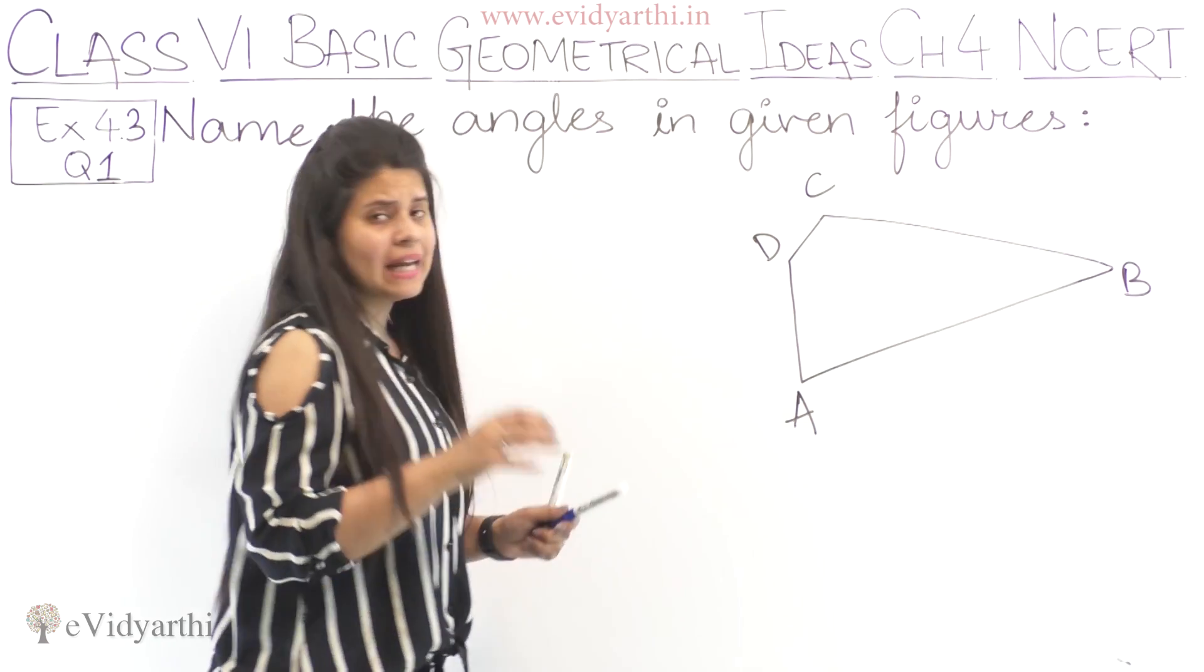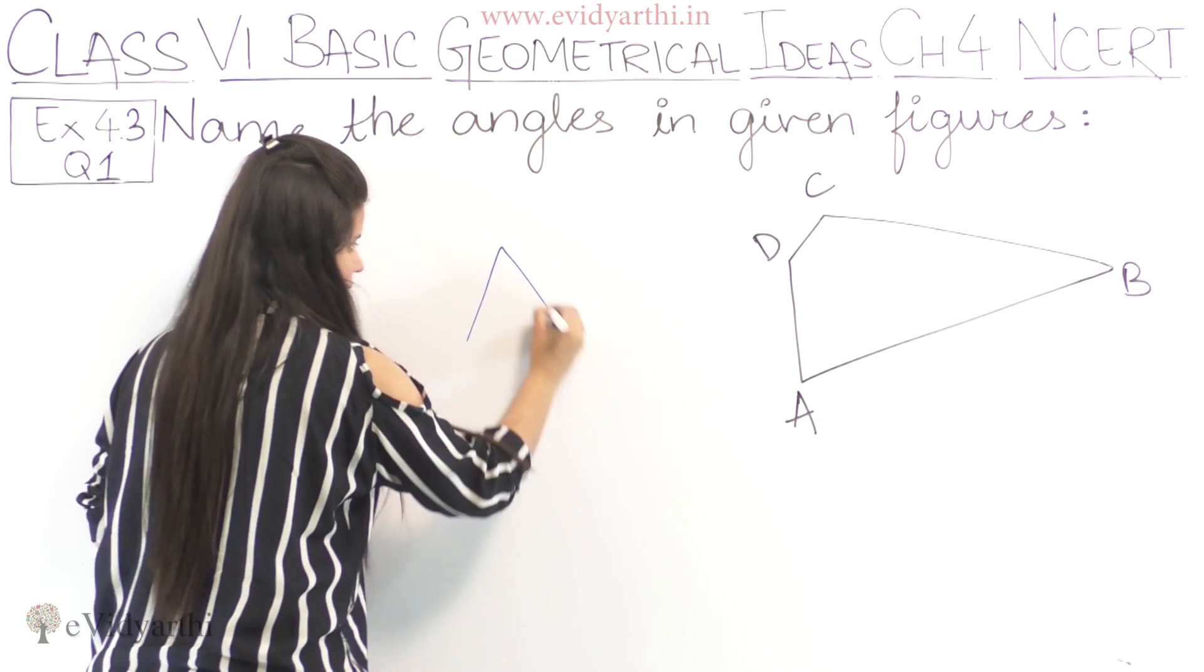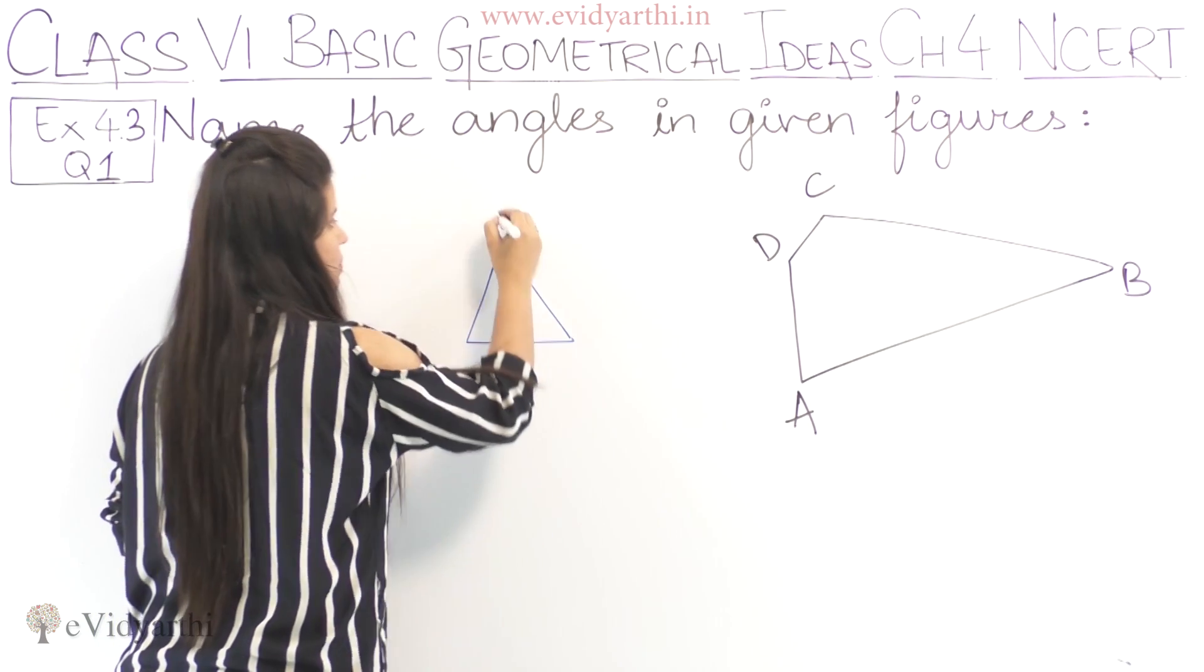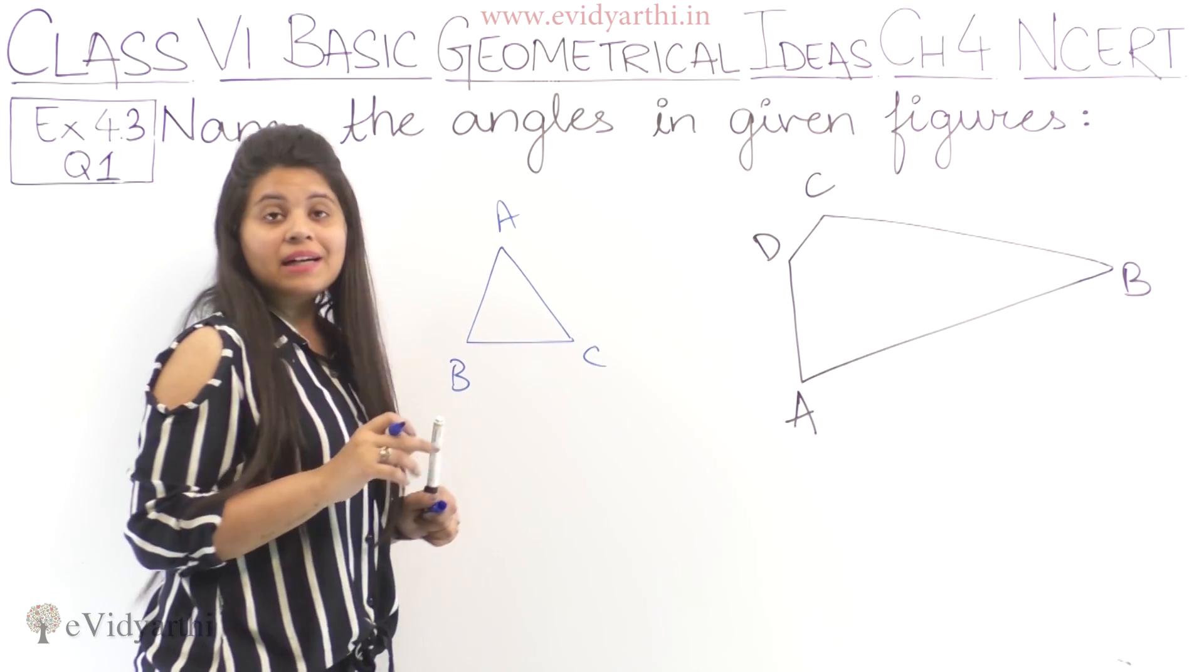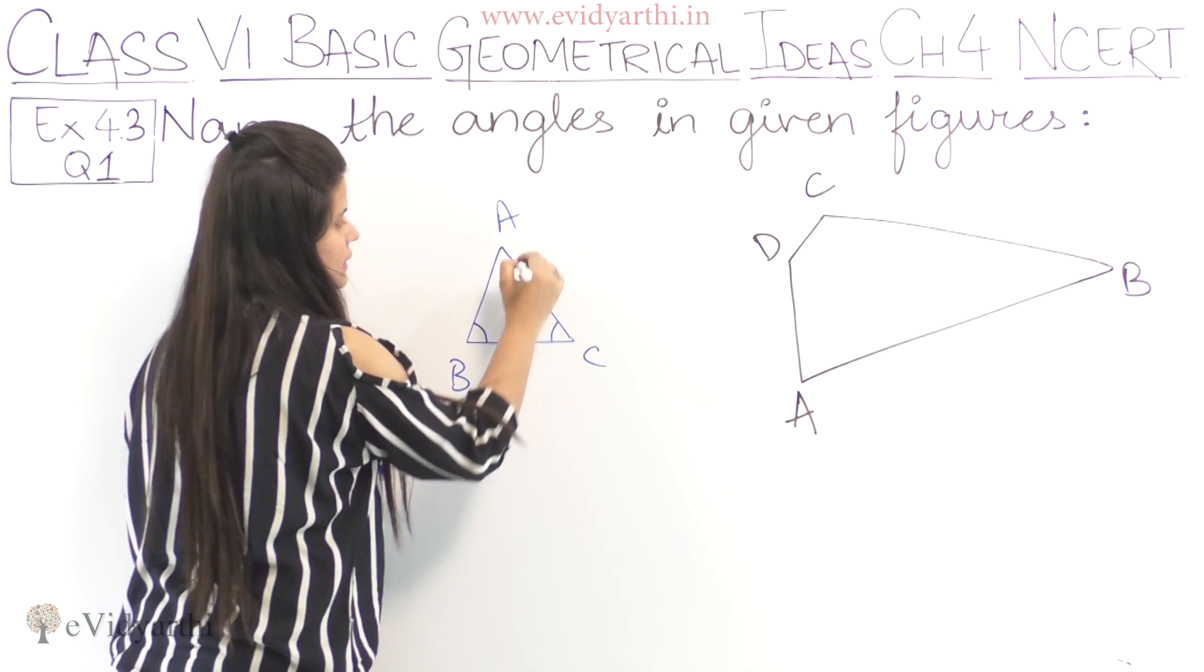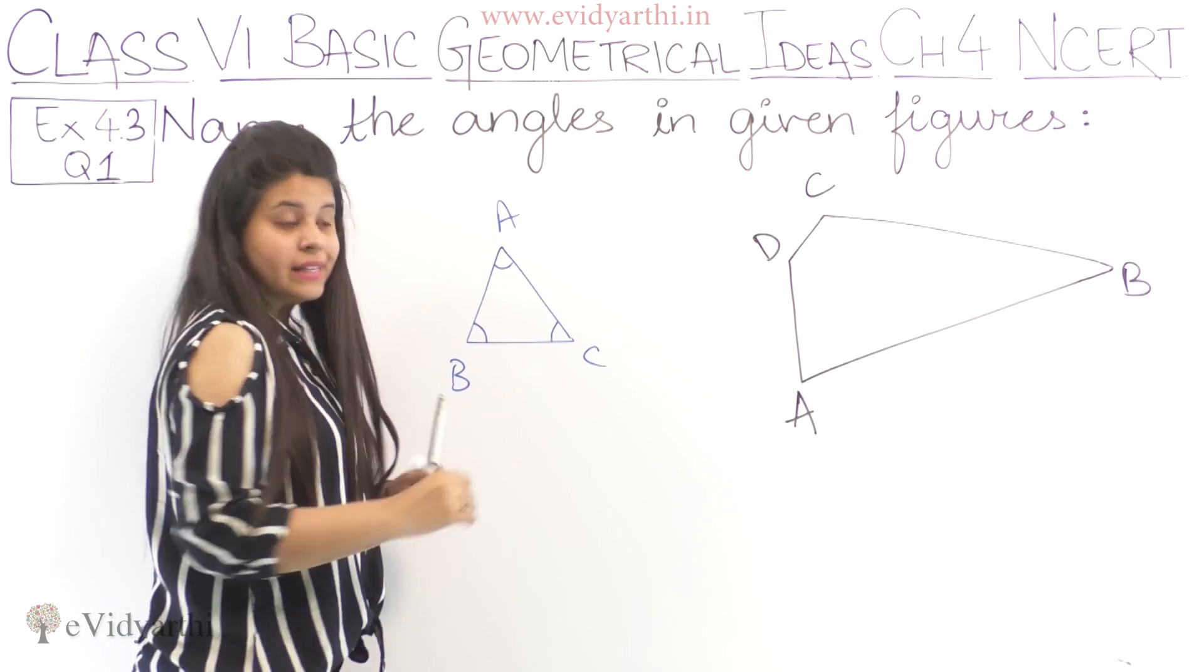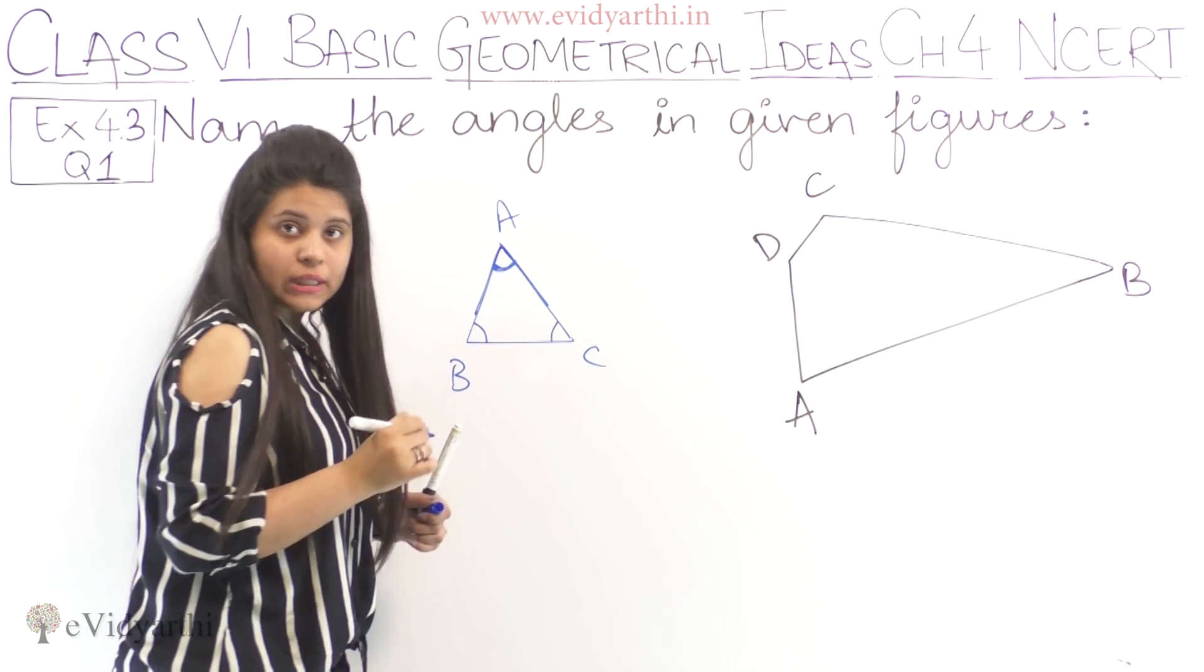How do angles come from this figure? If we take a triangle here like this, let's name it A, B, C. Now, how many angles will there be? This is an angle, this is an angle, this is also an angle. So this is the same thing.